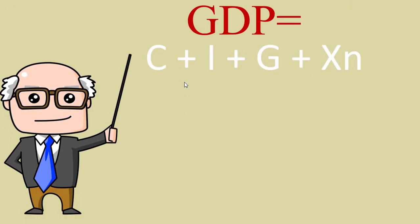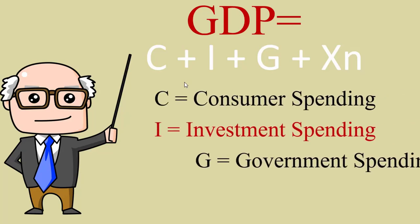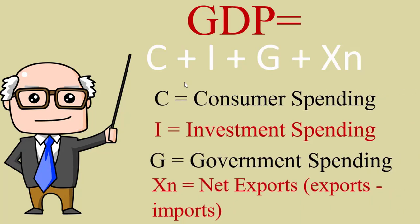We've already learned the four components of GDP: consumer spending, investment spending, government spending, and net exports. These are the components of aggregate demand.